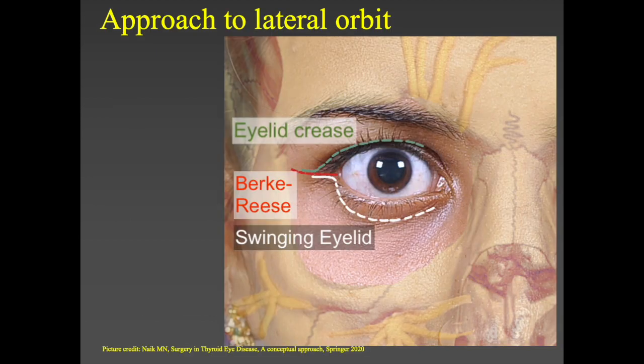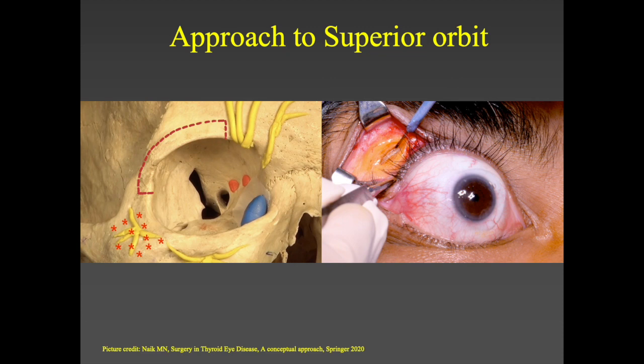The approach to the lateral orbit can be through the eyelid crease, a Berke crease incision, or a swinging eyelid incision. When approaching the superolateral part of the orbit, it is easy to go extra-periosteal.